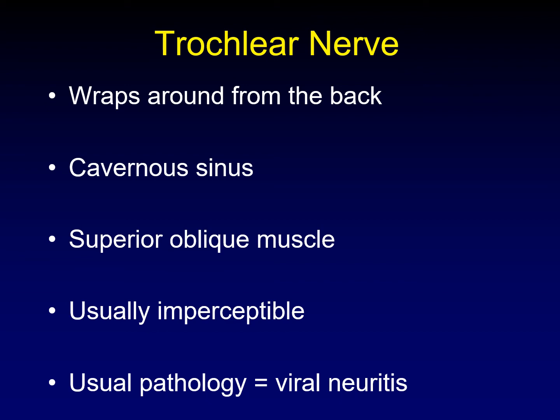The trochlear nerve is minuscule — so small that it is usually imperceptible on imaging. Every once in a while you get lucky and you see it; otherwise, you're only going to see it if it is affected by pathology. The most common pathology to affect the trochlear nerve is a viral neuritis, which is usually not evident on imaging. So when you have an isolated trochlear nerve palsy, the radiology is typically negative and you make a presumptive diagnosis of viral neuritis. Most of those patients do very well.